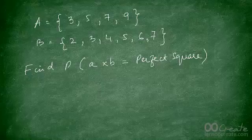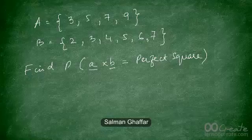Now try this question: set A contains the numbers 3, 5, 7, and 9; set B contains the numbers 2, 3, 4, 5, 6, and 7. One number is chosen randomly from set A — call it small a — and another from set B — call it small b. Find the probability that A times B is a perfect square. Hit pause now and think about this question.